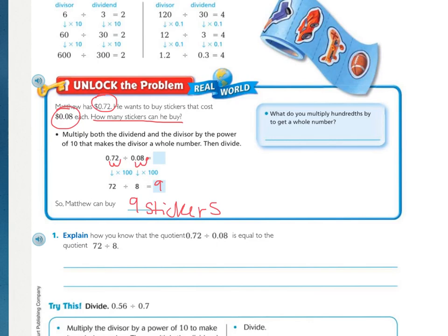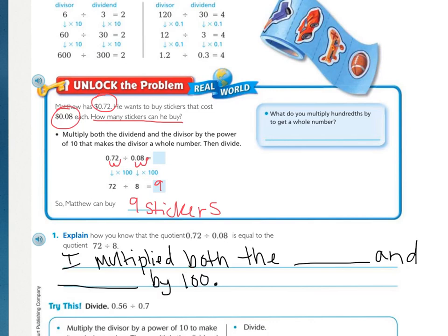Looking at the explain. How do you know that the quotient 0.72 divided by 0.08 is equal to the quotient of 72 divided by 8? You can use this sentence prompt to answer that question. I multiplied both the blank and the blank by 100, which by moving the decimal, you do this even without thinking about it.